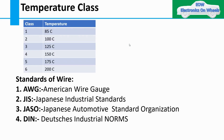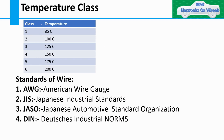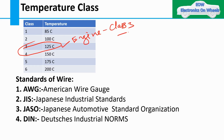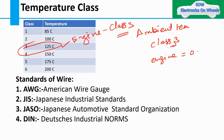Now let's move to temperature classes. As mentioned, for the engine compartment, Class 3 is required. For Class 3, the ambient temperature consideration applies, and the minimum wire cross-section to assign for the engine compartment is 0.5 mm². I hope this clarifies how temperature classes and ambient temperature affect wire selection.